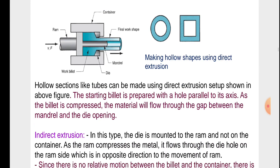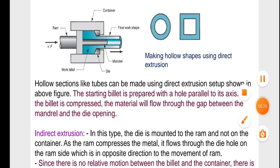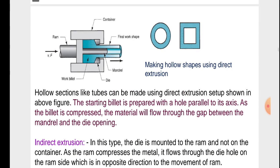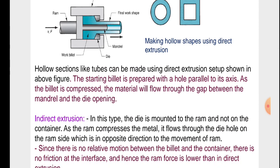Hollow sections like tubes can be made using the direct extrusion setup. The figure shows the container with two dies, the ram inside the container acting on the work with velocity v and force, and a mandrel which is also present in the container. The starting billet is prepared with a hole parallel to its axis. As the billet is compressed, the material flows through the gap between the mandrel and the die opening.